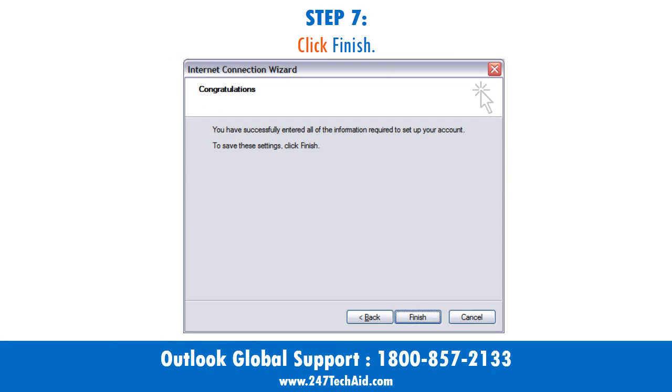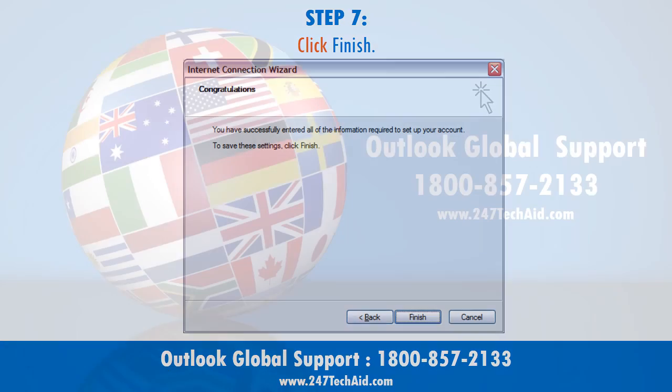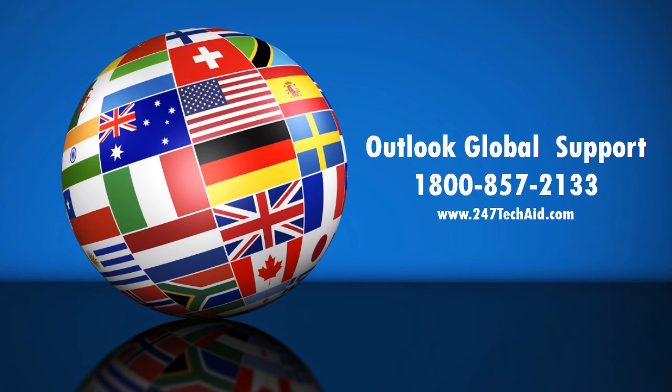Step 7. Click Finish. Call now to troubleshoot your technical issues. Outlook Global Support. 1-800-857-2133.